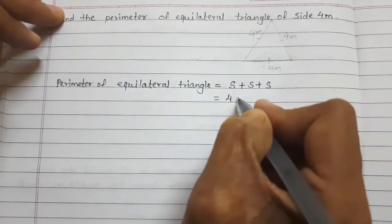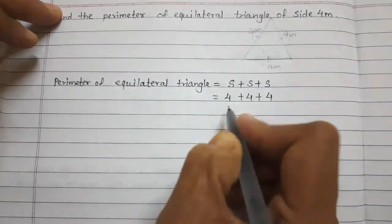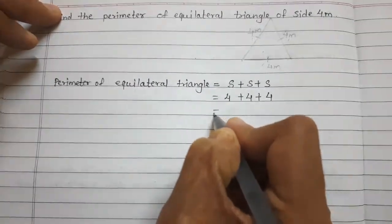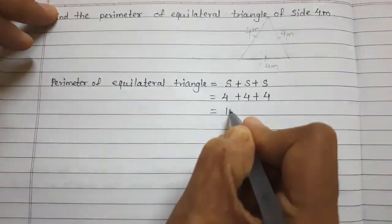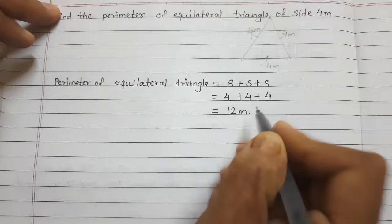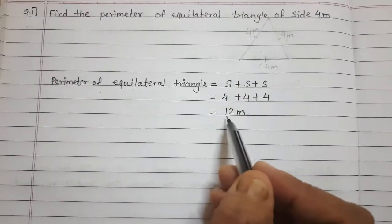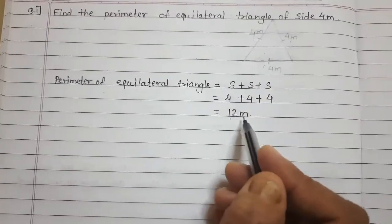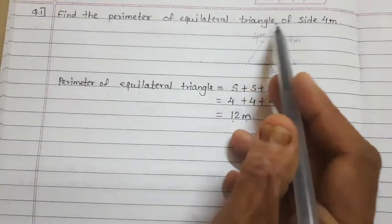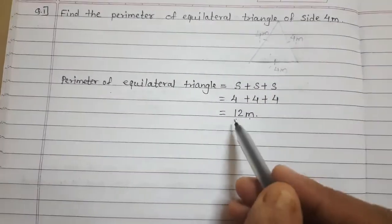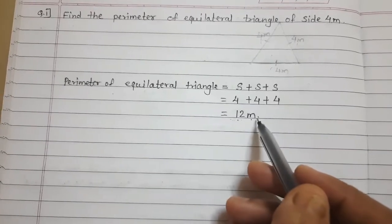So the calculation is 4 meter plus 4 meter plus 4 meter. 4 plus 4 is 8, and 8 plus 4 is 12. So the perimeter of the equilateral triangle of side 4 meter is 12 meter.